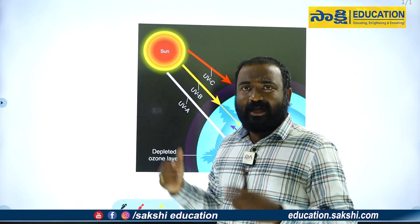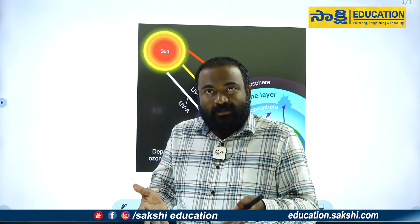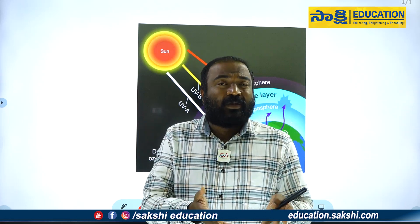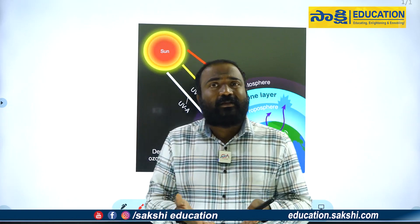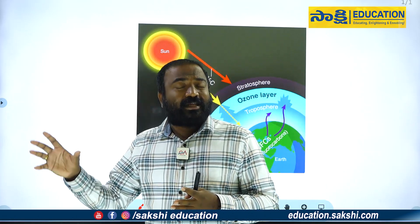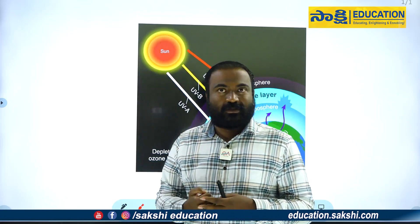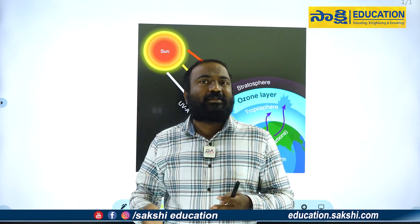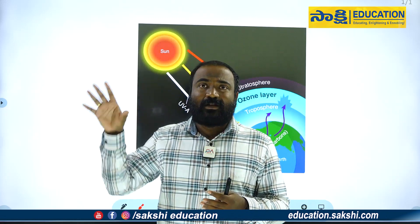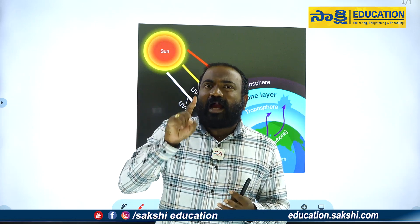If you understand the background of the atmosphere, you can imagine the environmental parts. You can understand the components of the environment: atmosphere (air), hydrosphere (water), lithosphere (rock/soil), and biosphere (living organisms). Atmosphere is a very unique layer. We can talk about atmospheric pressure.